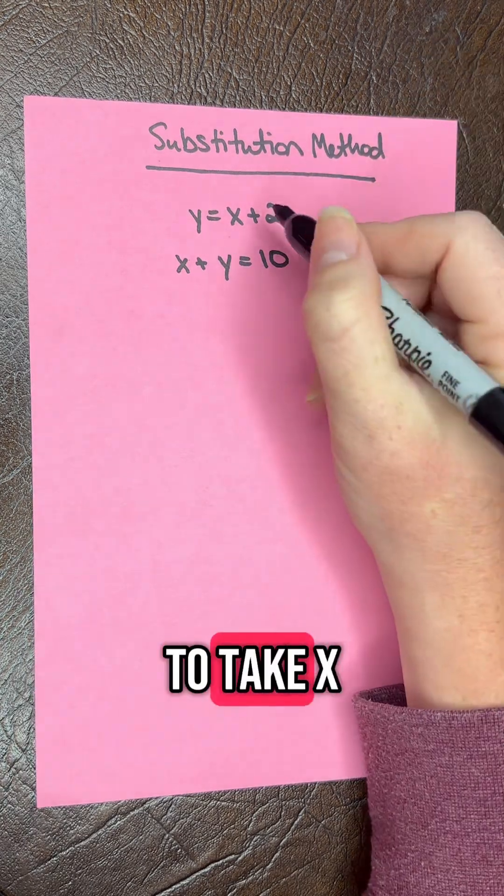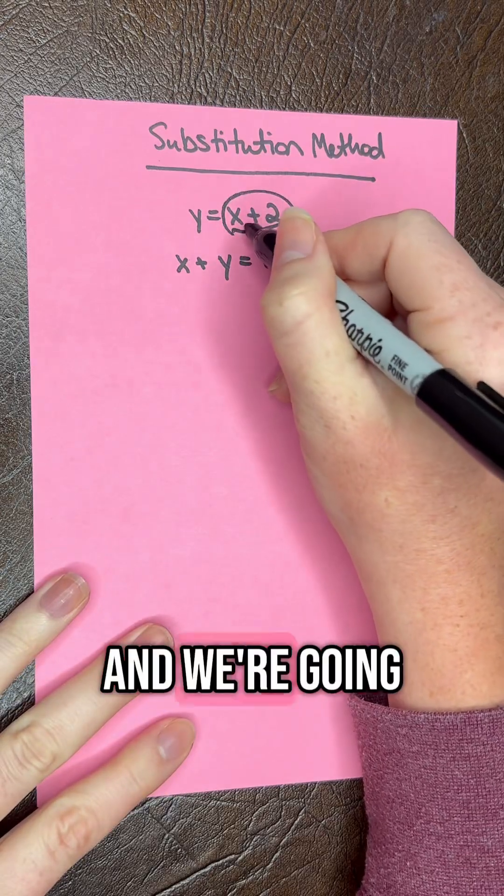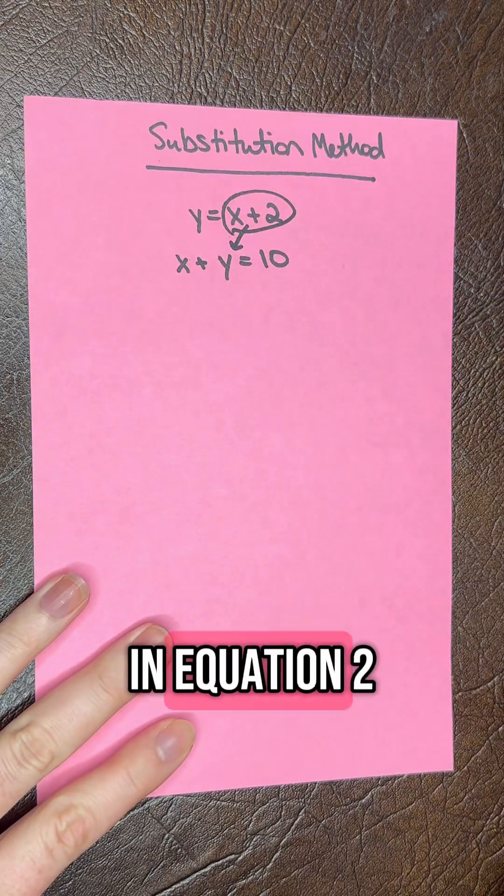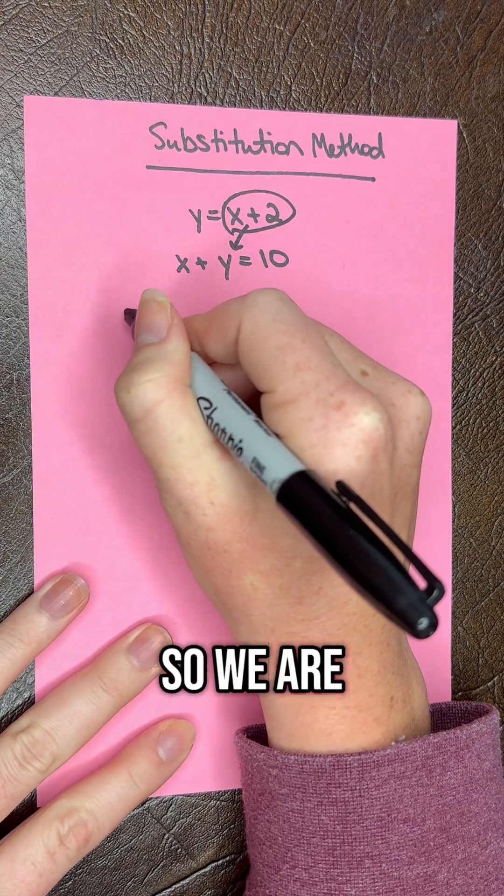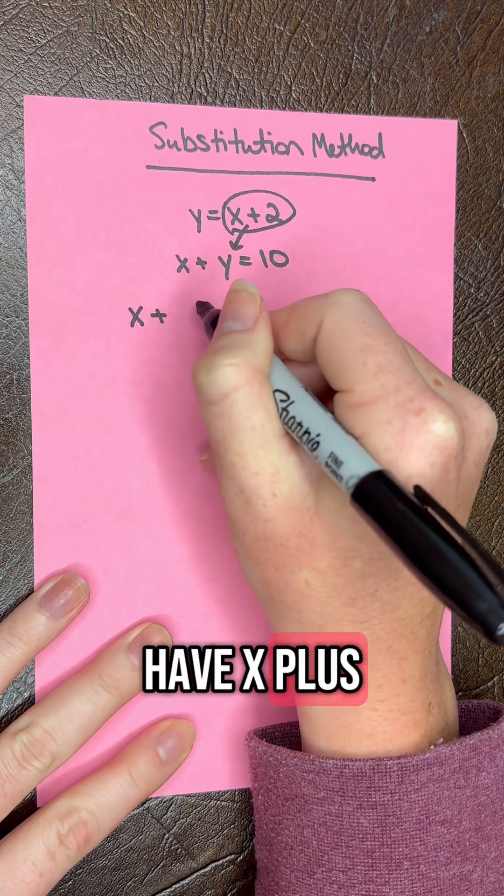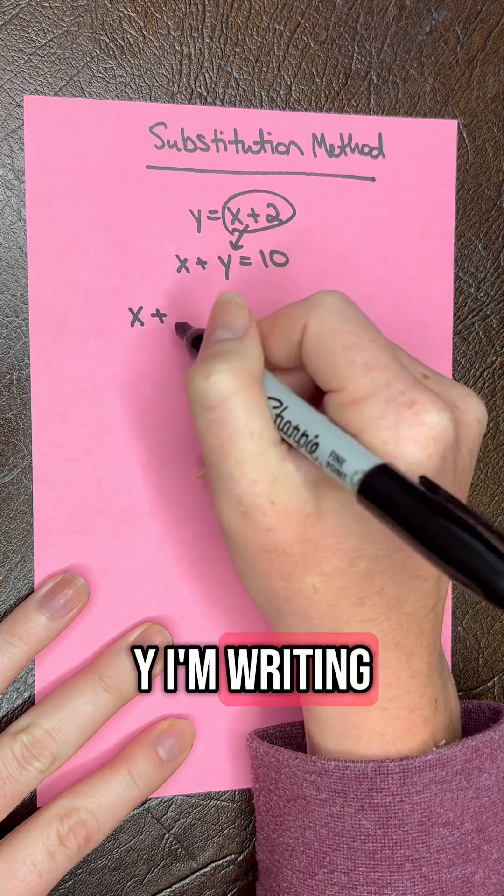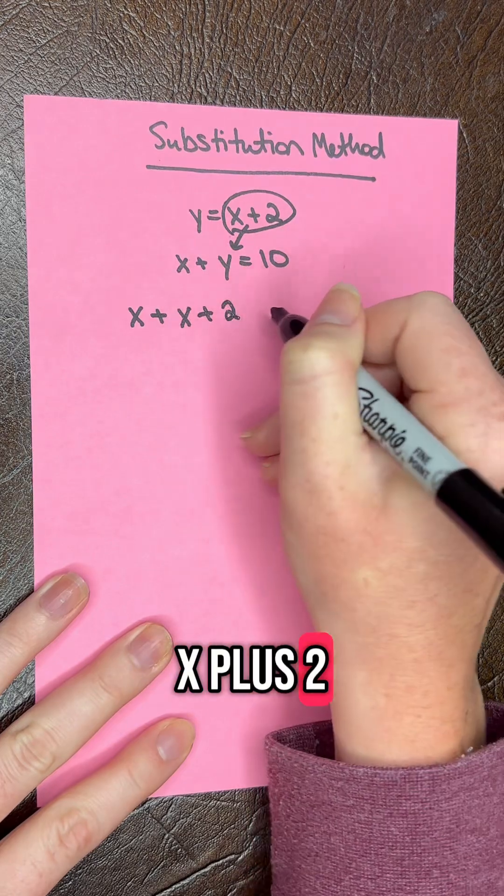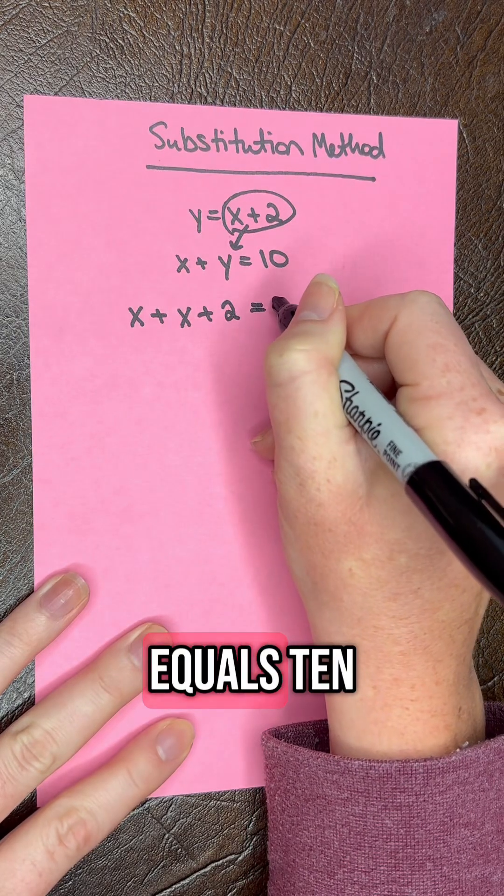So we're going to take x plus 2, and we're going to plug it in for y in equation 2. So we're going to do a rewrite now. We have x plus, now instead of y, I'm writing x plus 2 equals 10.